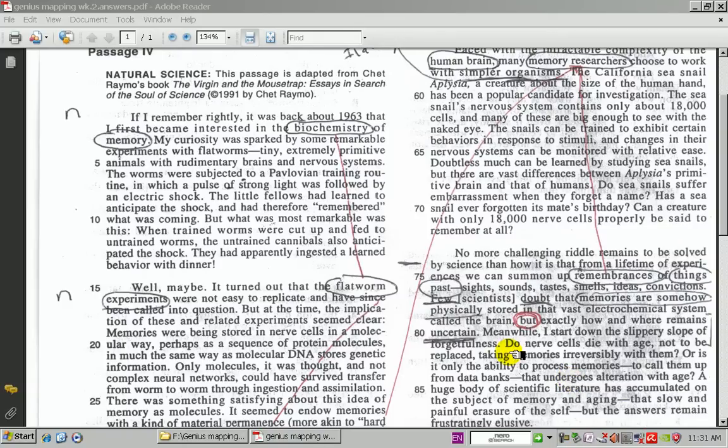Remember, Genius Mapper's belief: there's no reason to read every single word in a passage. Passages are basically put together in paragraph form. This is called an argumentative essay. A paragraph will be put together with a topic sentence followed by details to support that particular topic. So what we do as a Genius Mapper is we read our first sentence to find out what the big picture is.